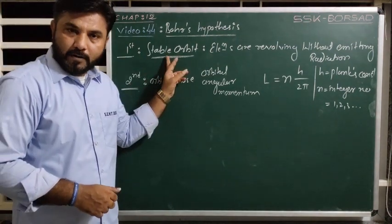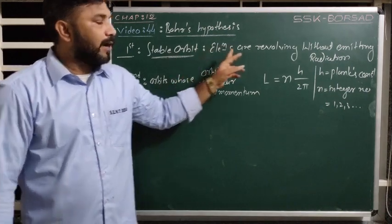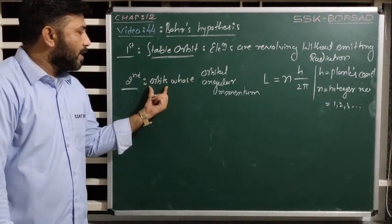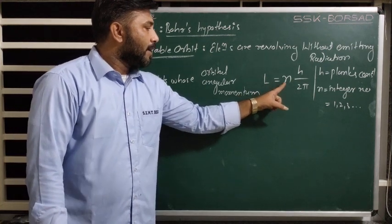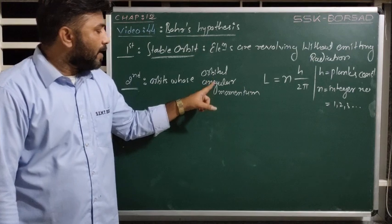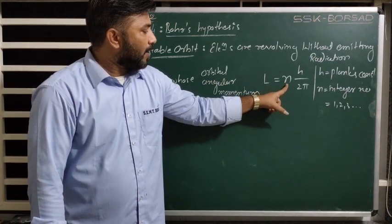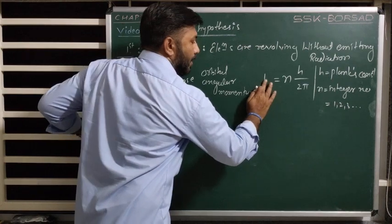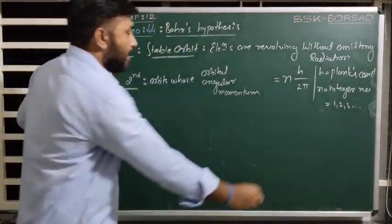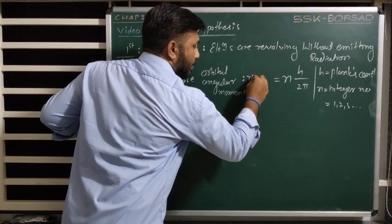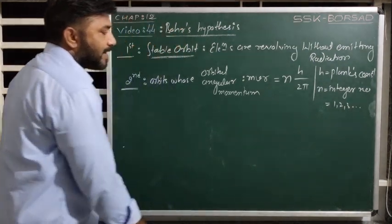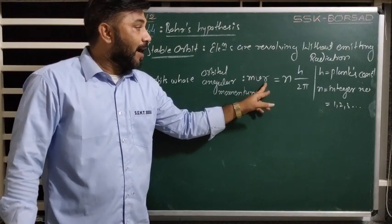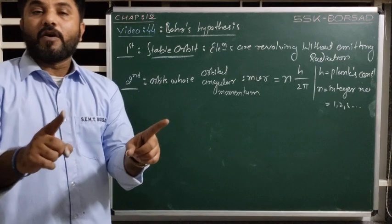So first: in a stable orbit, electrons do not emit radiation. Second hypothesis: what is a stable orbit? The orbit having orbital angular momentum L equal to nh upon 2π — meaning orbital angular momentum is an integral multiple of h upon 2π. And this orbital angular momentum also equals mvr from 11th standard, where m is the mass of the electron, v is the velocity of the electron, and r is the radius of the circular path.